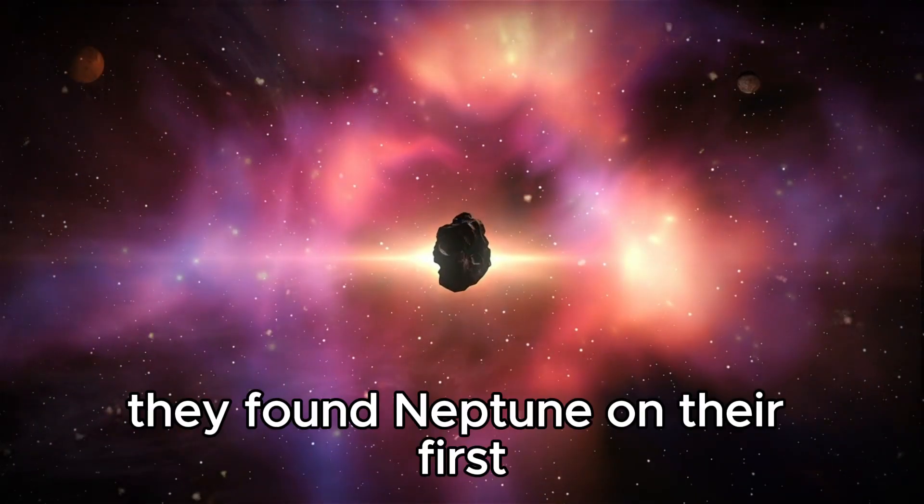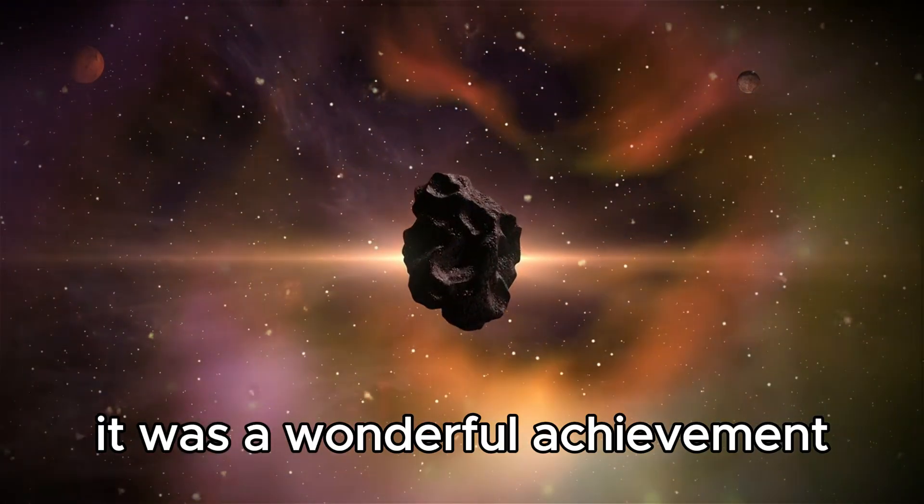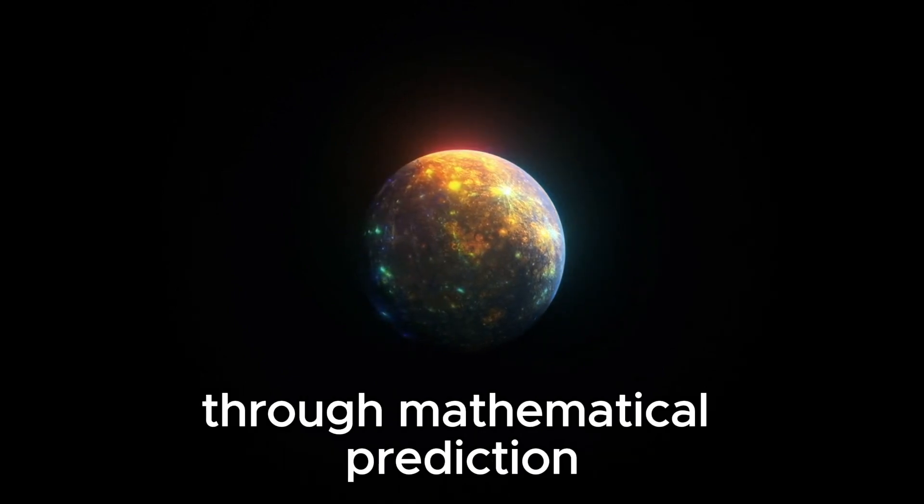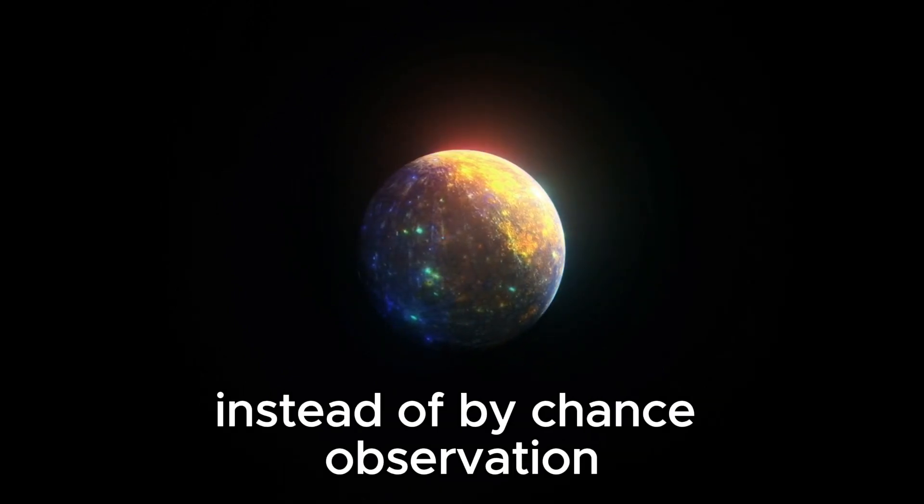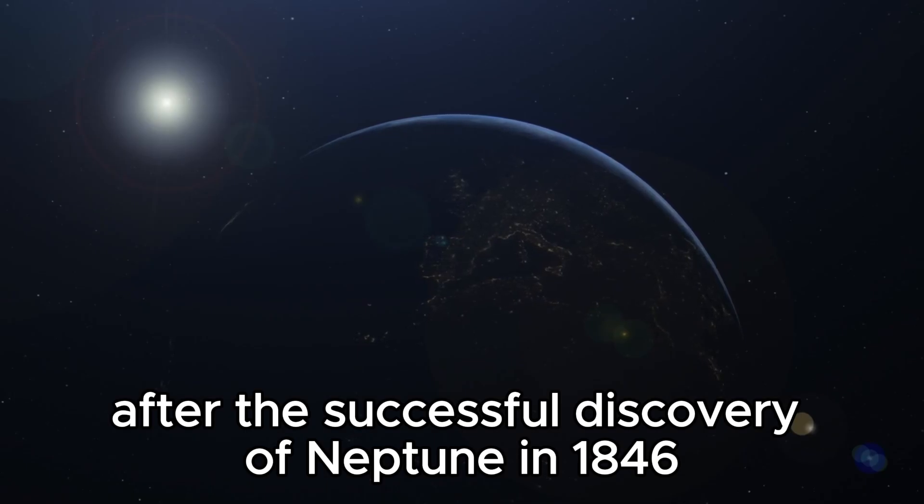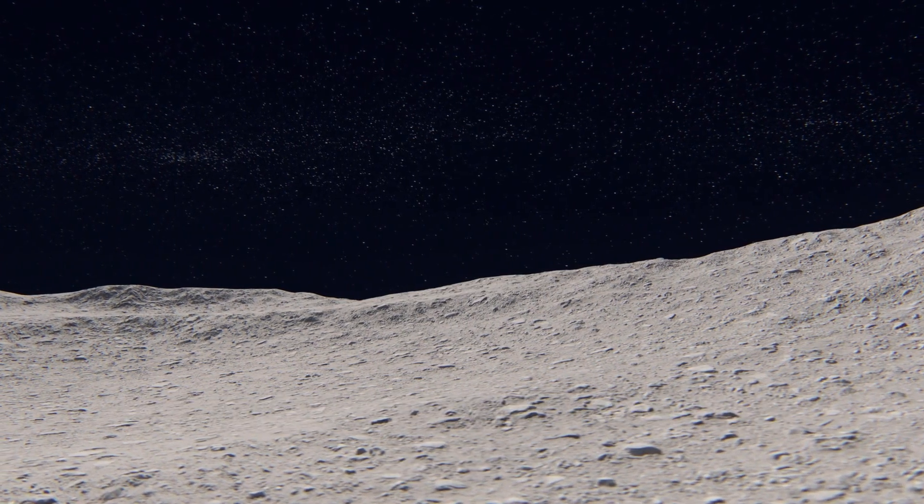Surprisingly, they found Neptune on their first memorable night of searching. It was a wonderful achievement as it was the first time a planet had been discovered through mathematical prediction instead of by chance observation. After the successful discovery of Neptune in 1846, astronomers thought they had a complete picture of the major planets in our solar system. However,